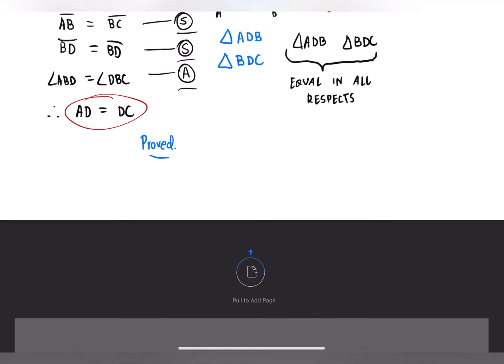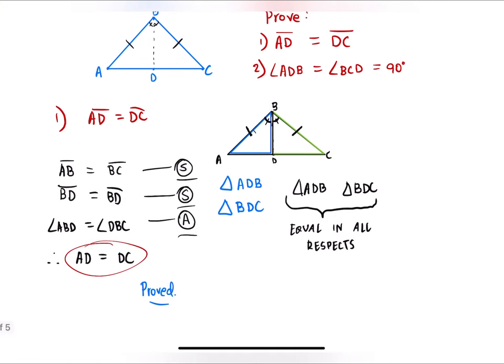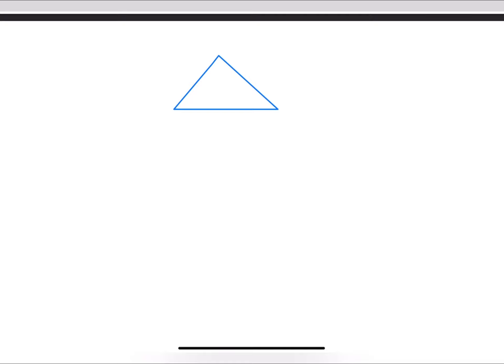Now let's do the second part, which is having to prove that both angles at the bottom are equal. I will reconstruct our triangle right here — A, B, C — and this has been bisected. AB equals BC, and we have to prove that angle ADB equals angle BDC, and equals 90 degrees.